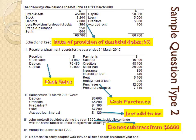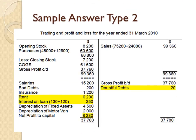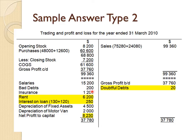The trading account shows cash purchases, credit purchases, cash sales, and credit sales, along with opening and closing stock to derive gross profit. Bring down gross profit to the profit and loss section. Include the decrease in doubtful debts provision, depreciation at 10% on all assets, interest on loan of $250, rent of $6,200, insurance of $1,200, and bad debts of $200 to arrive at net profit, which carries forward to the balance sheet.